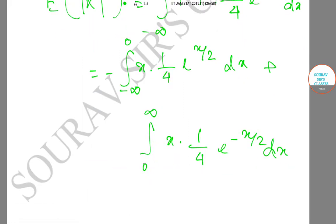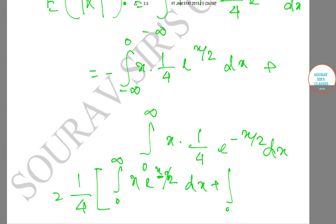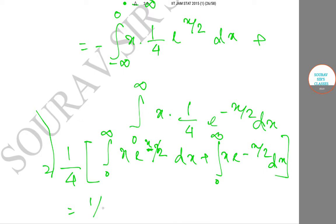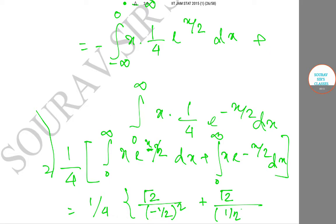This becomes (1/4) multiplied by the integral from 0 to infinity of x e to the power x/2, plus (1/4) multiplied by the integral from 0 to infinity of x e to the power minus x/2 dx. That equals (1/4) multiplied by [Gamma(2) / (1/2) squared plus Gamma(2) / (1/2) squared].